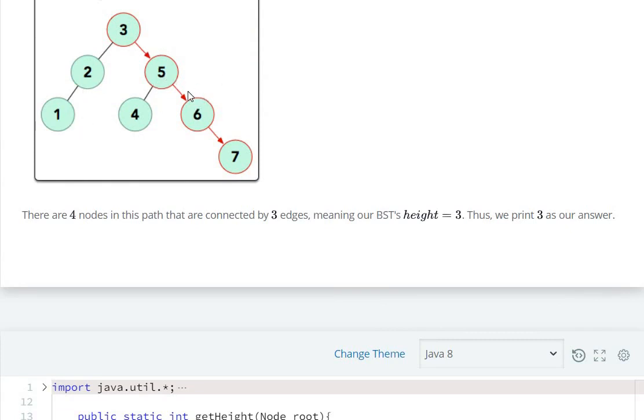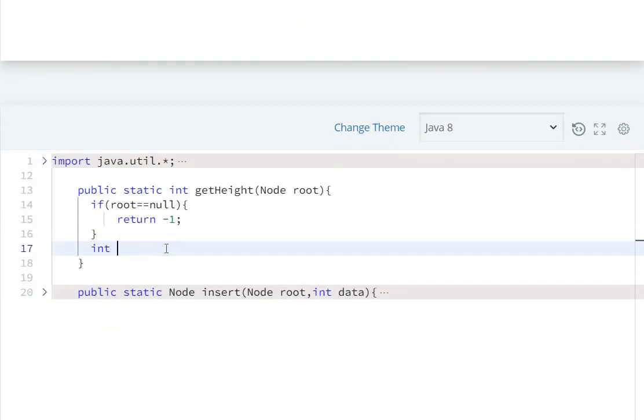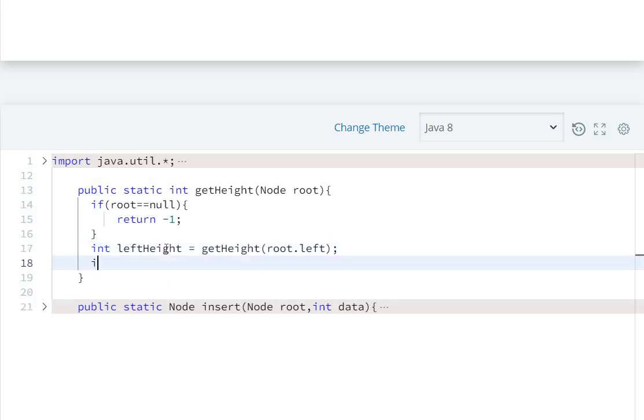First of all, int leftHeight equals getHeight of root.left. Then int rightHeight equals getHeight of root.right.